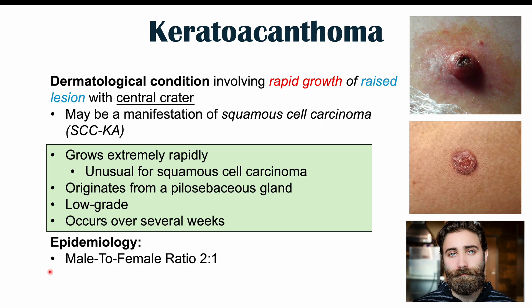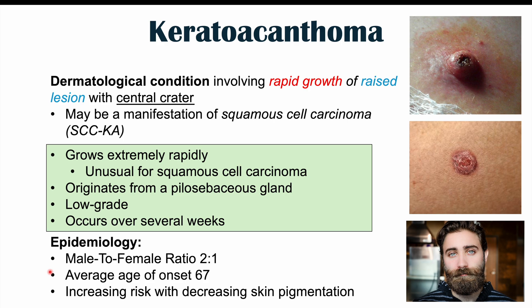This condition is going to occur later in life. Most often it occurs between the ages of 50 to 69 — that's the age group with peak incidence — but the average age of onset is 67. It's extremely rare in younger patients; below the age of 20 it is extremely rare. It's also more likely in individuals with a lighter skin complexion, with increasing risk with decreasing skin pigmentation, likely related to UV light damage as a possible etiology.